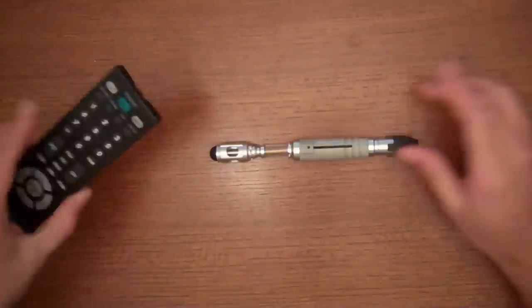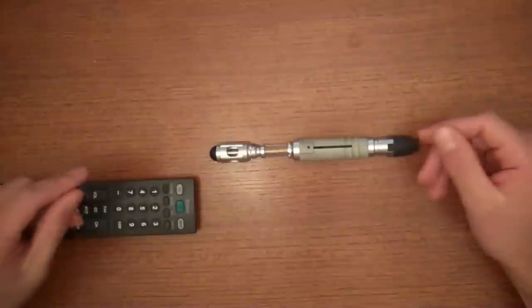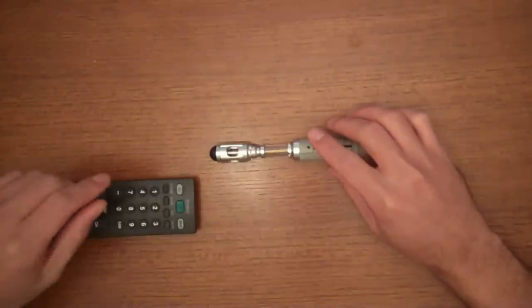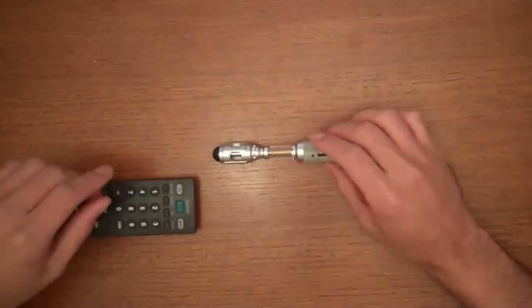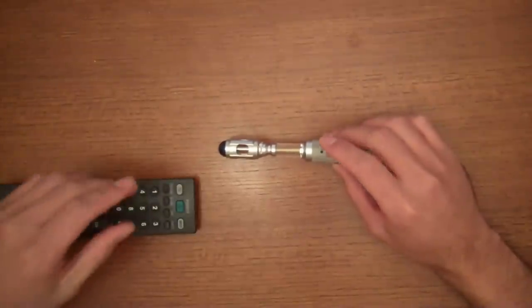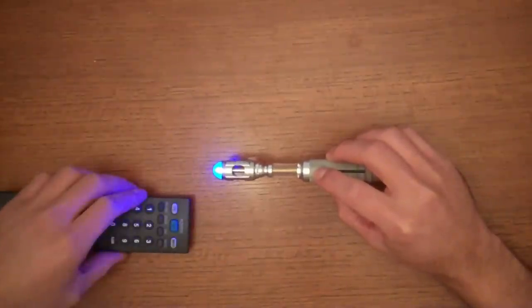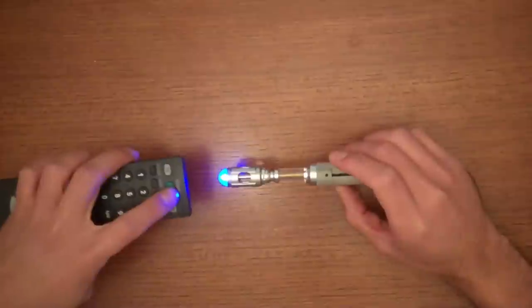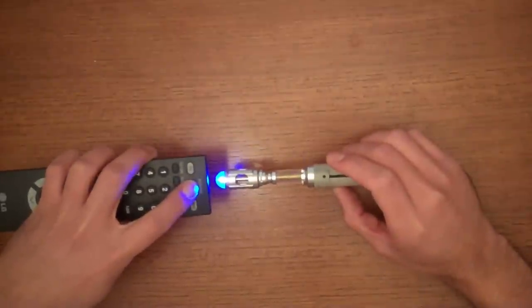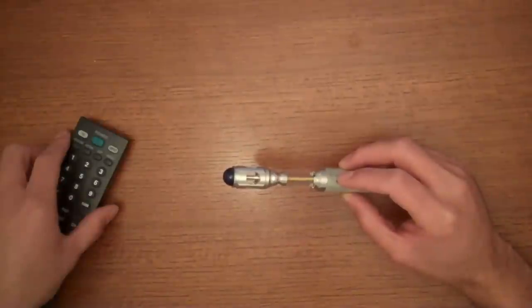To actually program the thing is really easy. All you have to do when it's in programming mode is just perform one of the gestures. The one I'll use for an example is a double button press. The reason is you can't do a single one because that just changes between modes, but you can do a double press. So just do press-press. It'll say the gesture. The light will go on, and you just press whatever button on your remote that you want that to be programmed to. When it gets it, it says okay. So now if I point this at my TV and do a double button press, it will power it on and off.